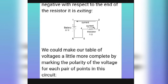Here is a picture showing points one through six with the current moving from one to two to three to four to five around the loop. We could make our table of voltages more complete by marking the polarity of voltage for each pair of points in this circuit.